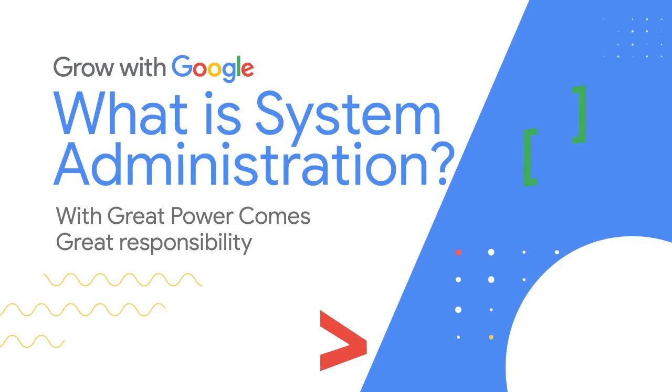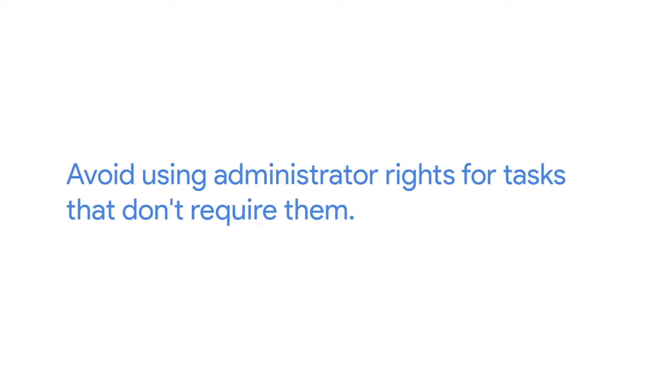You've learned a lot about the roles and responsibilities of a sysadmin. Being responsible for keeping data available isn't easy, but it's a rewarding role in IT. When you have administrator rights — whether for one machine, a fleet of 100 machines, or a cloud service with thousands of users — you need to use those rights responsibly. The most important thing is to avoid using administrator rights for tasks that don't require them. For example, don't browse the web as an administrator. Try to minimize the time spent in an administrative session: do what you need to do, and once you're done, close the session.